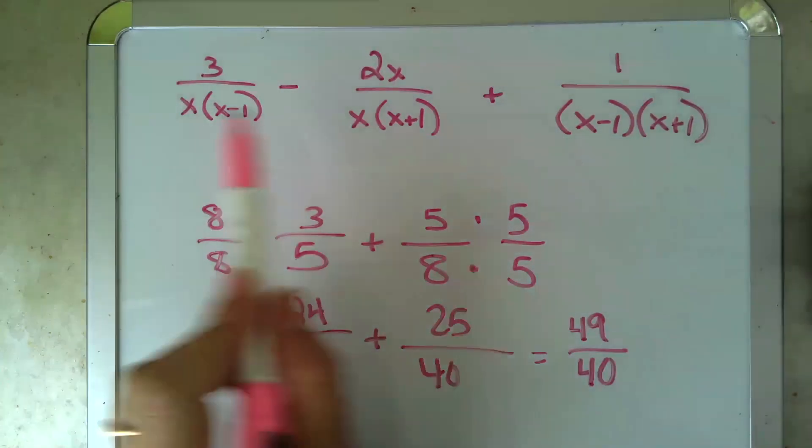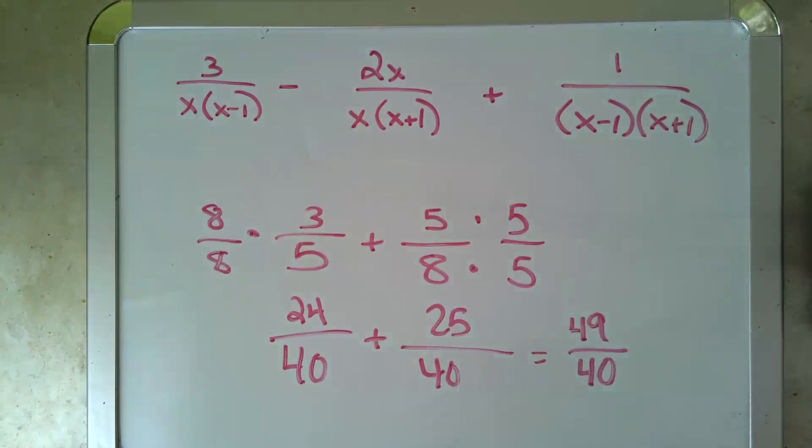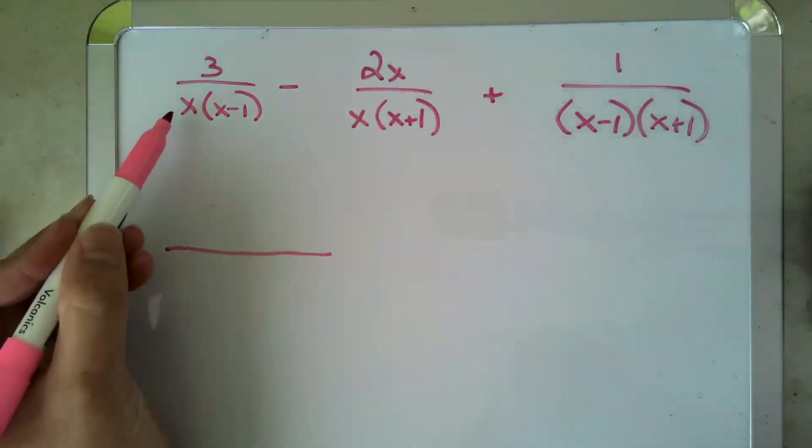Well, the exact same thing holds true when you have algebra instead of numbers down there. So let's take a look at what it looks like with algebra. The first thing I would want to do is look at all of the things being multiplied in my various denominators and come up with what my new denominator would look like. So I'd start by saying, well,